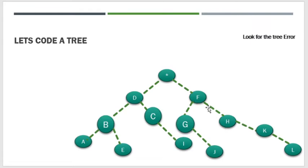Si F — ok naman. Si H — iisa ang child si K, nasa right din, kailangan nating i-move sa left. Ganon din si K — iisa ang child niya, bakit nasa right? Dapat ilagay sa left. Isa pang kailangan ninyong gawin pag nag-aayos kayo ng tree ay titignan ninyo yung level ng mga vertex kung tama ba.